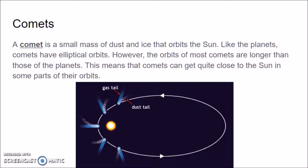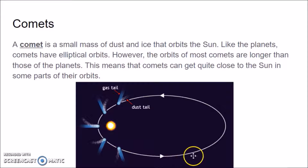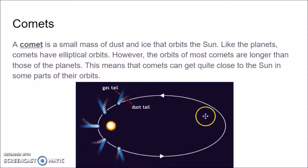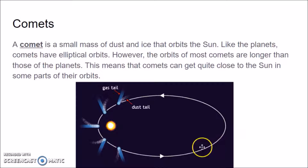Comets. A comet is a small mass of dust and ice that orbits the Sun. Like planets, comets have elliptical orbits — like an oval shape — but the orbits of most comets are much longer, big thin ovals compared to planets which are barely ovals at all. This means that comets can get quite close to the Sun in some parts of their orbit, then go way out into the outer parts of the solar system, and eventually come back in closer to the Sun again.